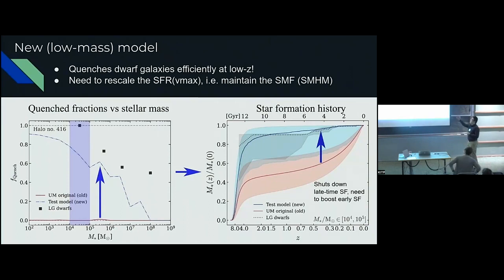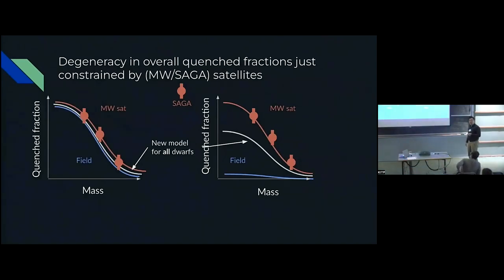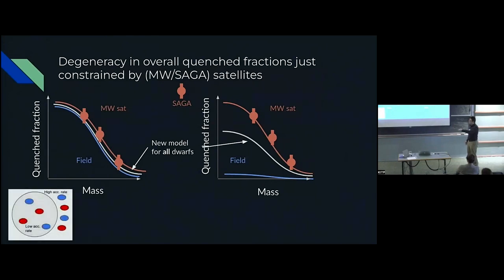I struggled with this over like eight months trying to reconstruct the model. There is this degeneracy of mapping how you map SFR onto these halos in the model framework. You could have a high overall quench fraction and basically no correlation with halo accretion history. Or you can have a much lower overall quench fraction and then a very strong correlation between SFR and halo accretion status. The field would all be star forming and only quench the satellites around Milky Way halos.